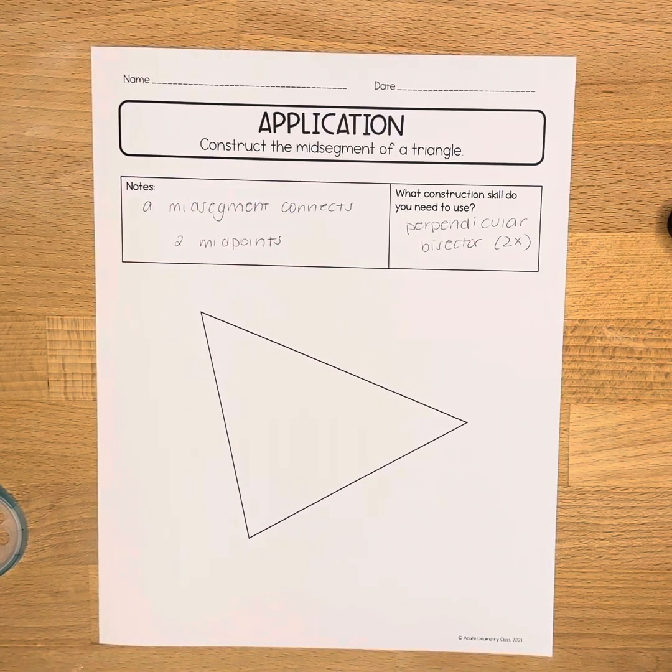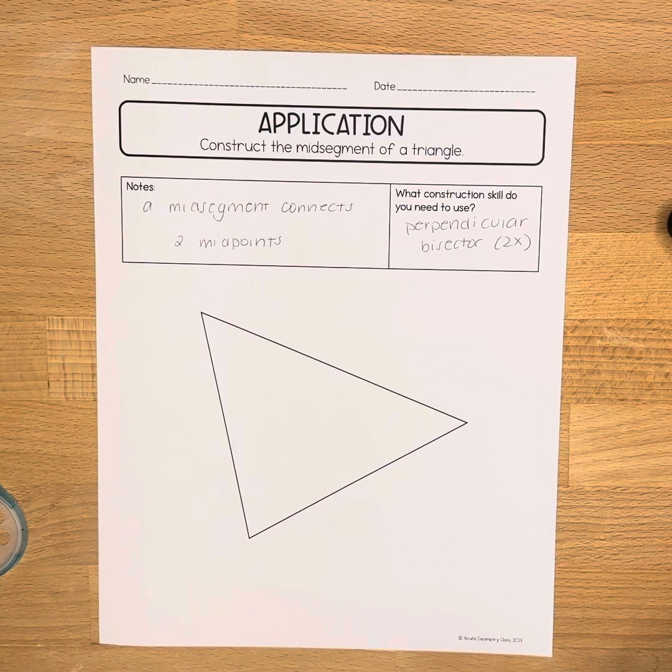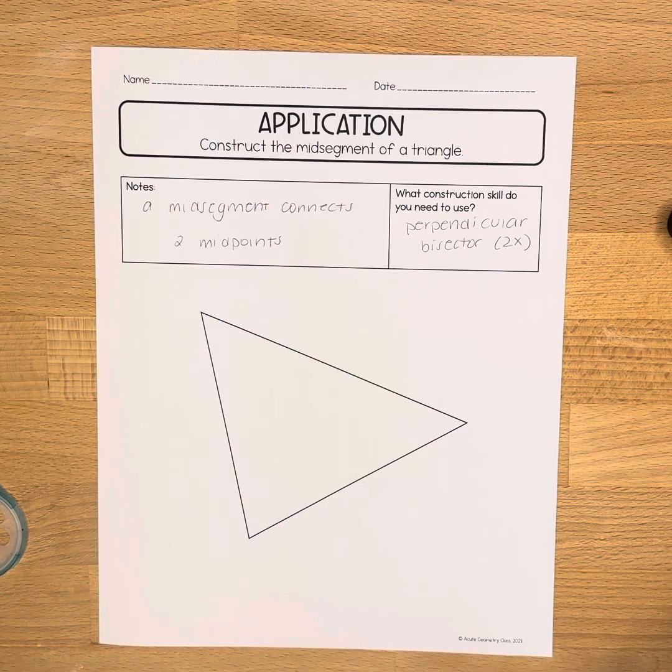In this video we're going to learn how to construct the mid segment of a triangle. A mid segment is a line segment that connects two midpoints, and for this we're going to need to use the perpendicular bisector construction two times in order to create our mid segment.